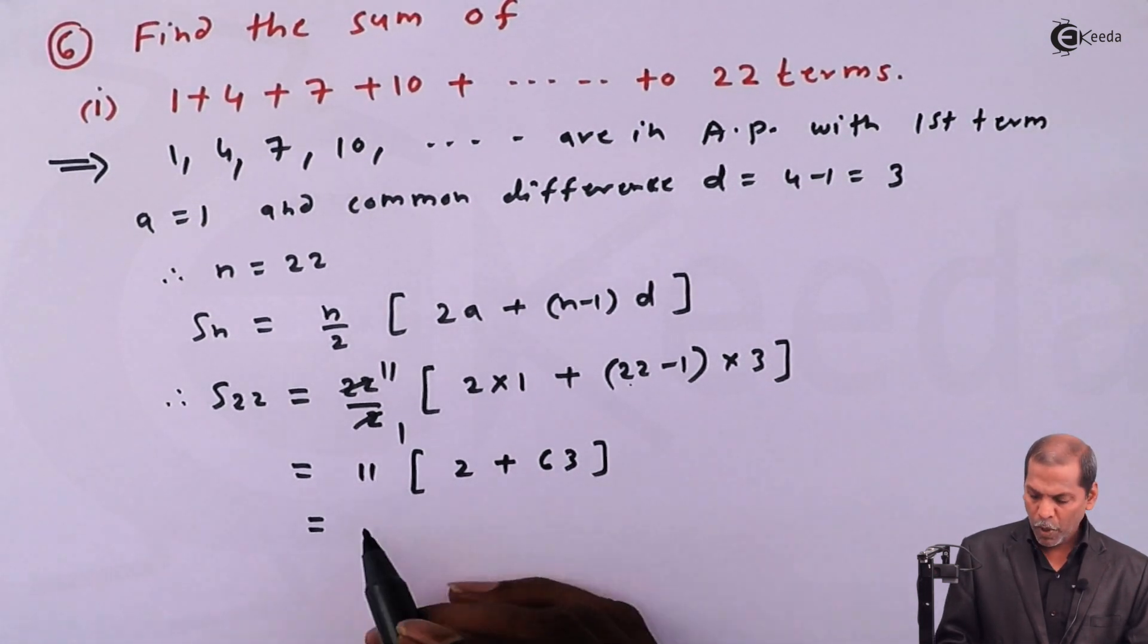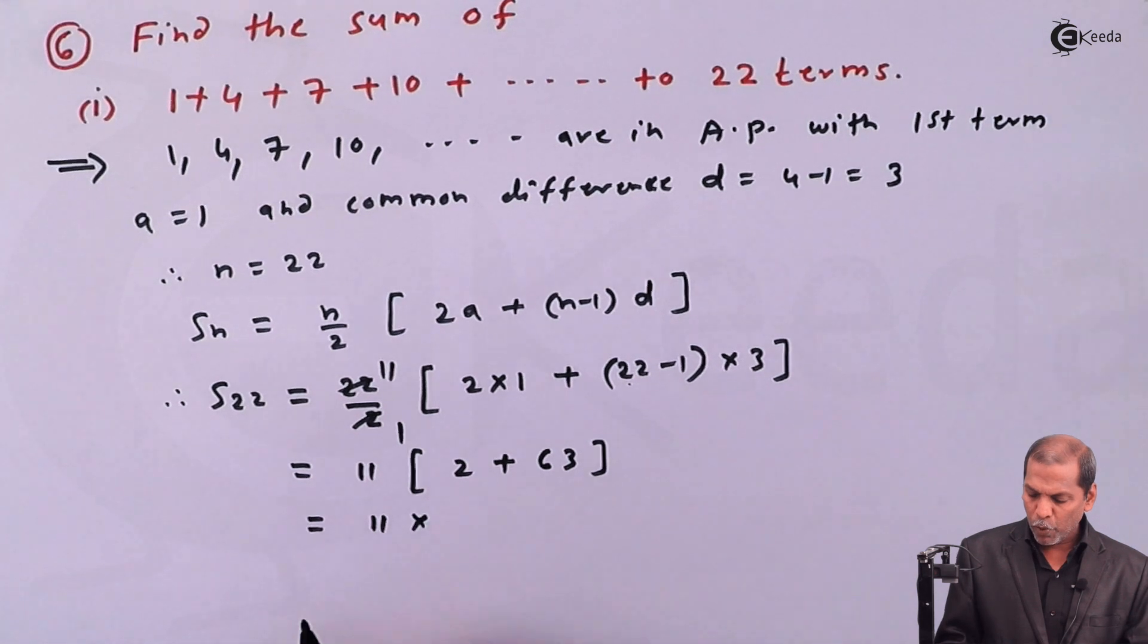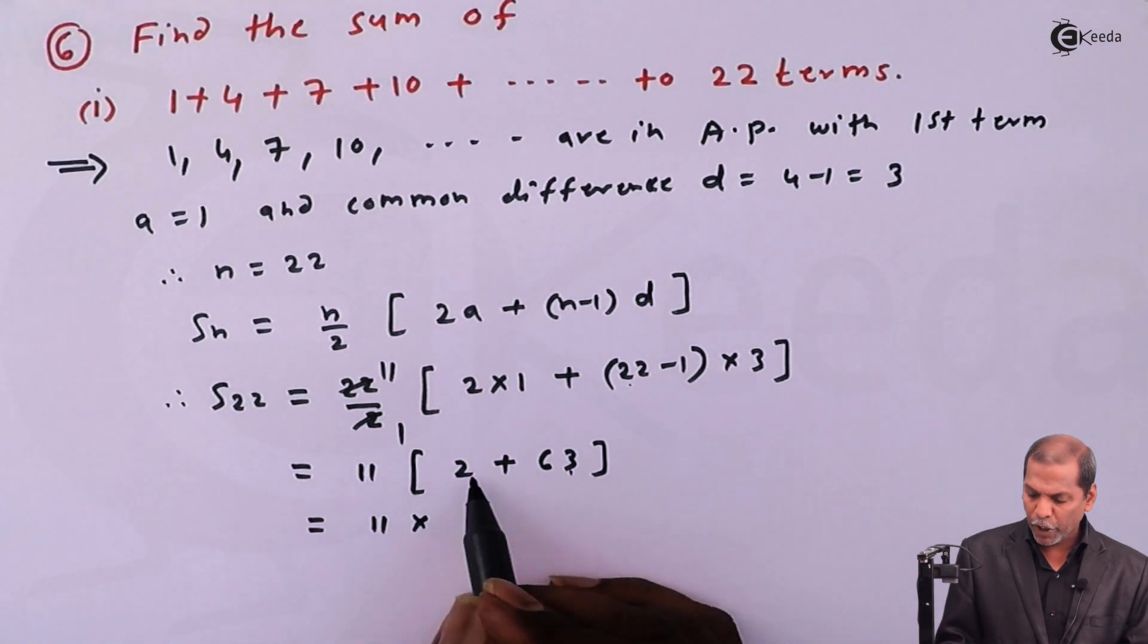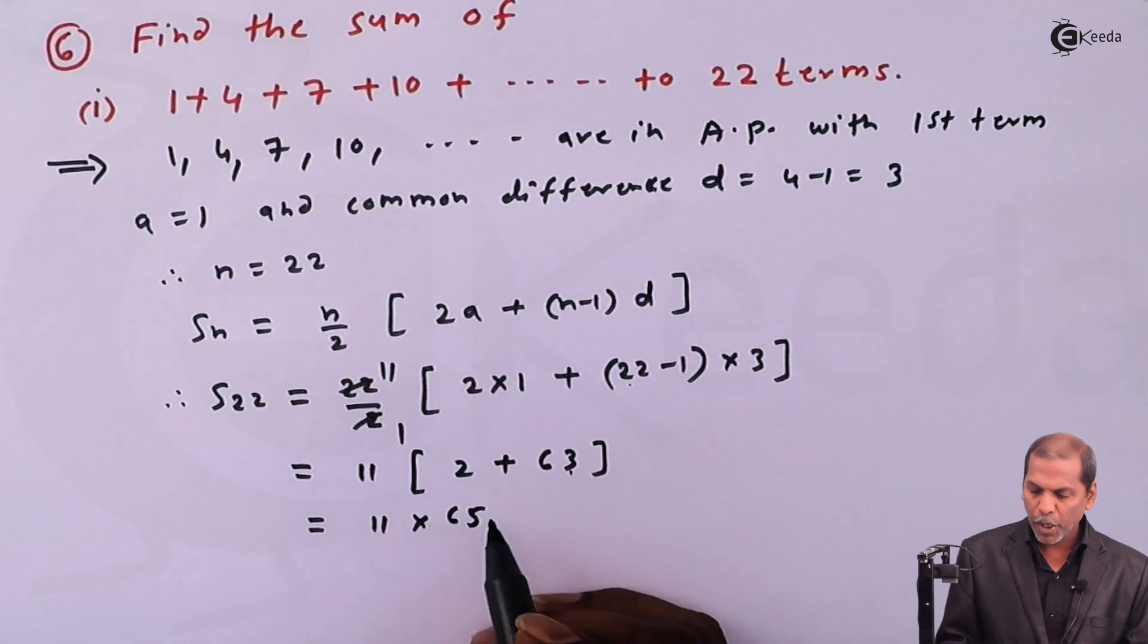So it equals 11 into, now 63 plus 2, that gives 65.